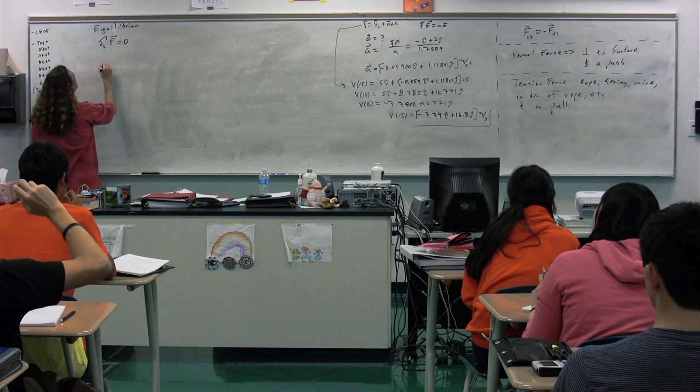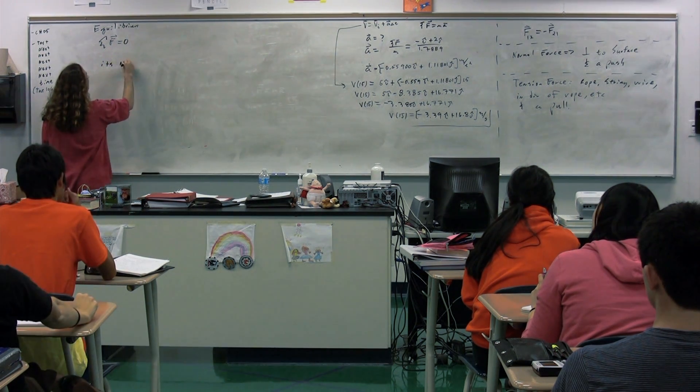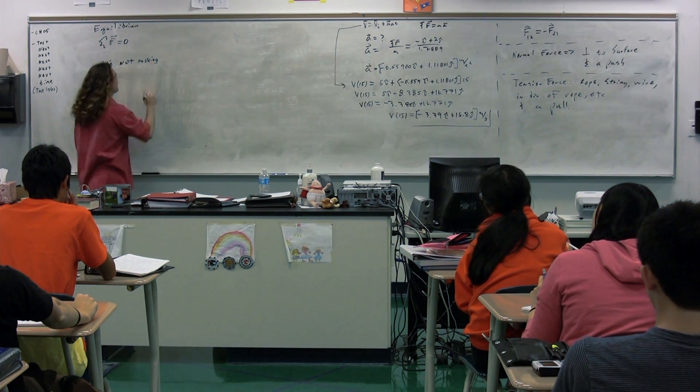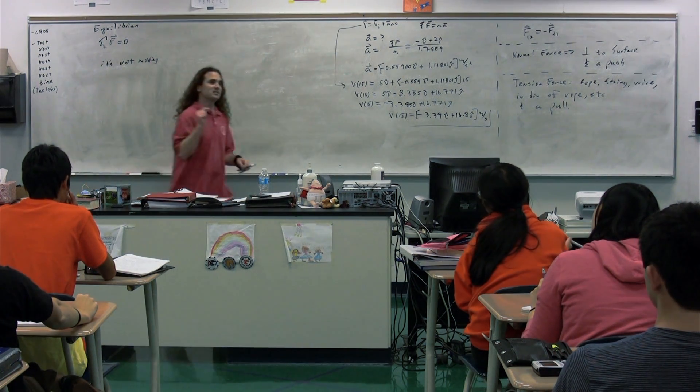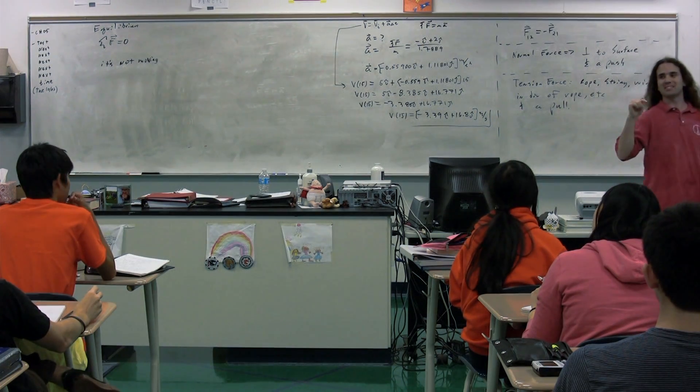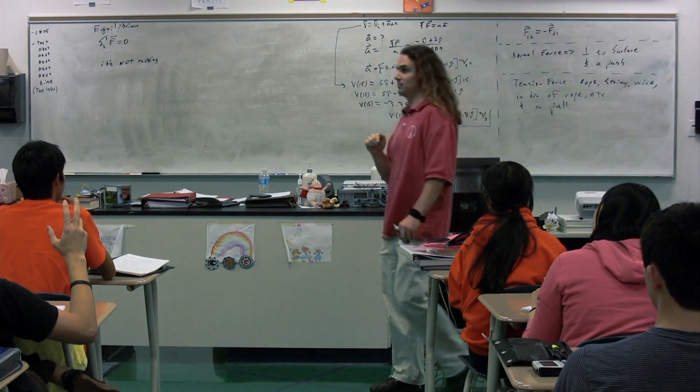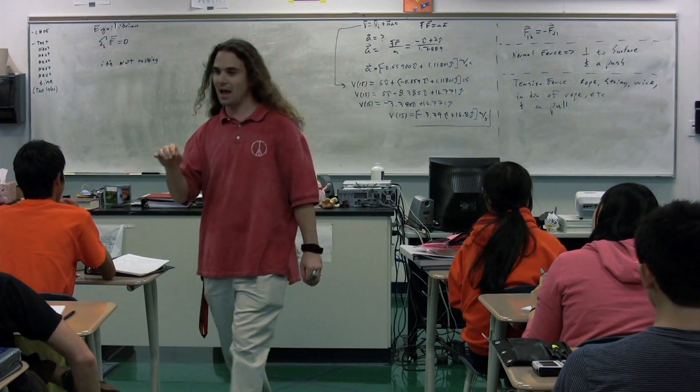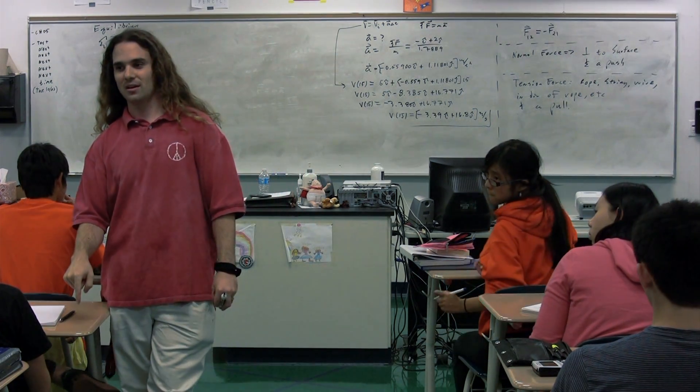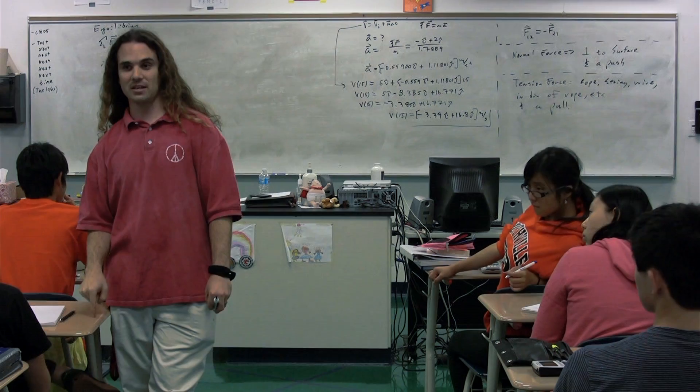Bless you. All right, please listen carefully. An object that is not moving is an object in equilibrium, but an object in equilibrium is not necessarily an object that is not moving. Say it one more time just to make sure you understand. An object that is not moving is in equilibrium, but an object that is in equilibrium is not necessarily not moving.